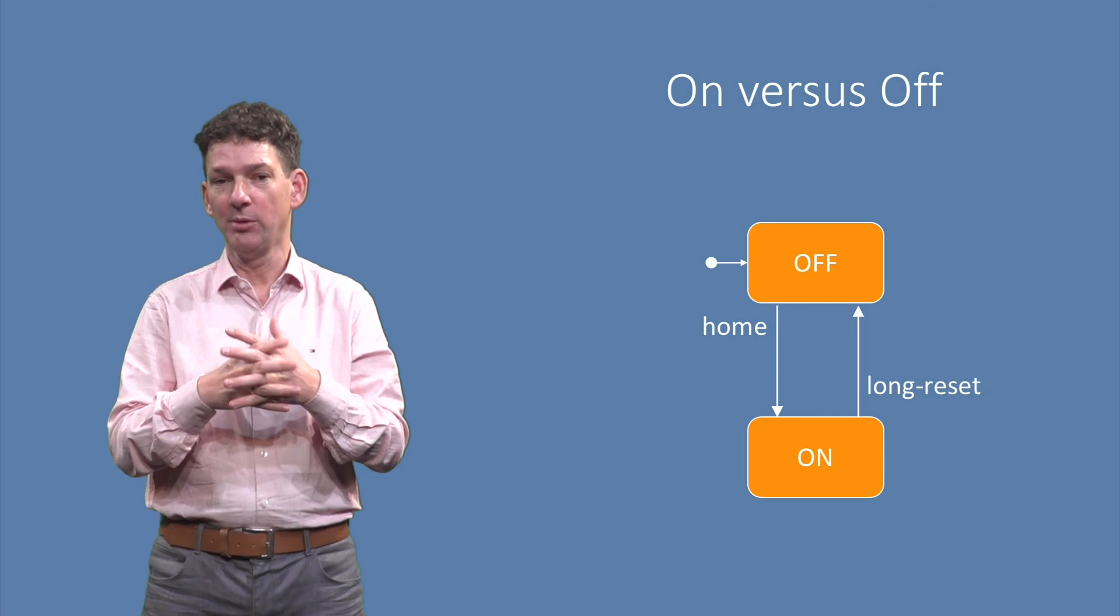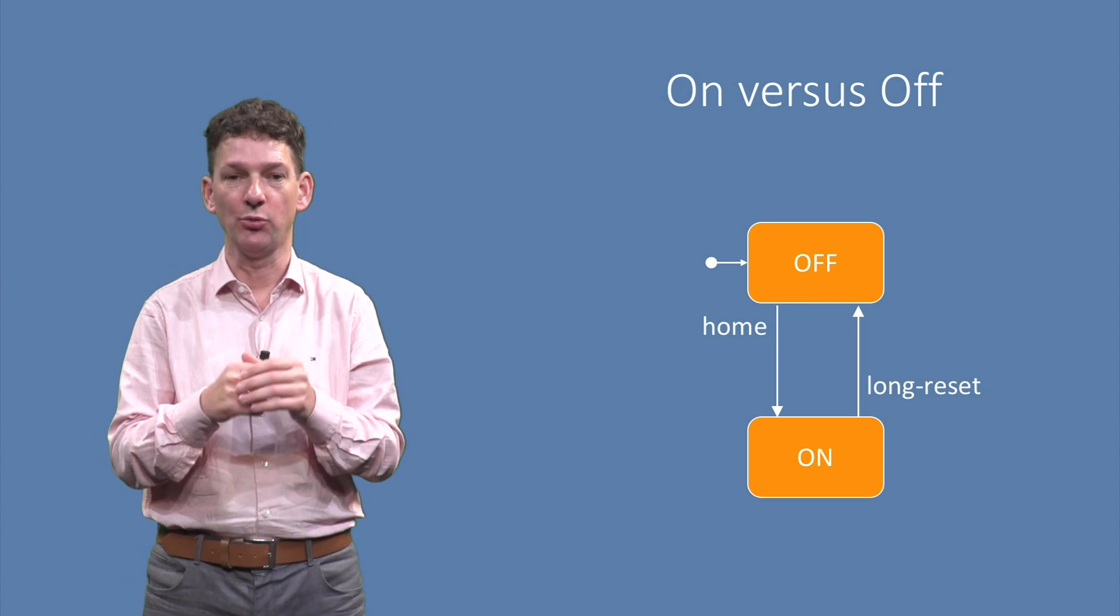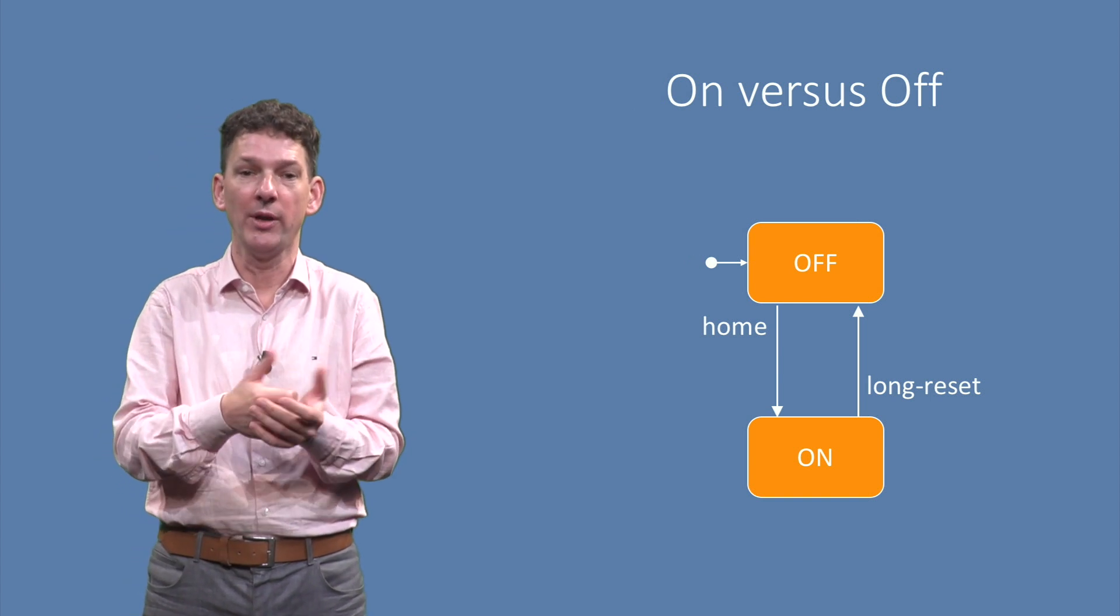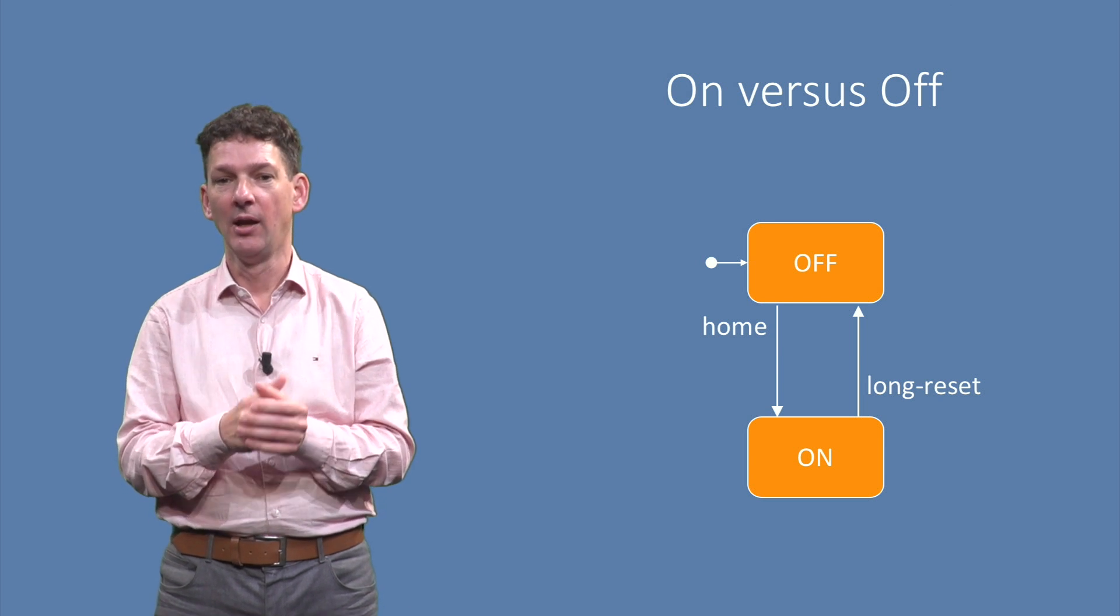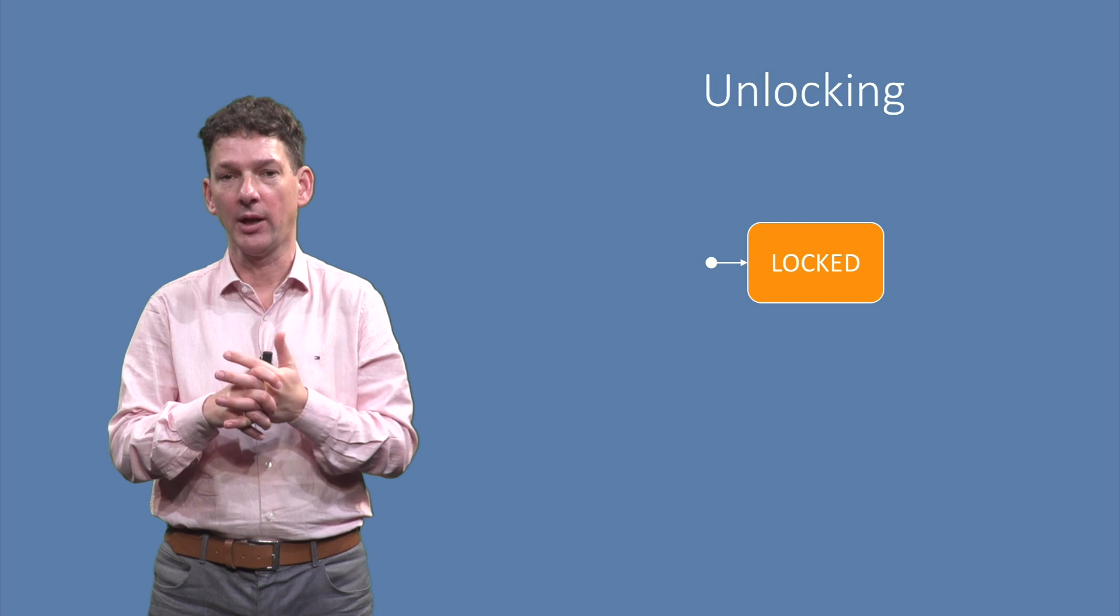This very simple model represents one aspect of the phone's behavior, namely how it can be switched on and off using the home and reset buttons. We can also model different behavior, for example unlocking the phone.